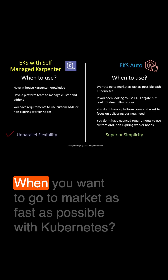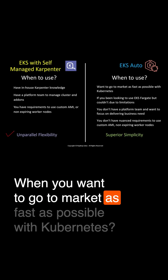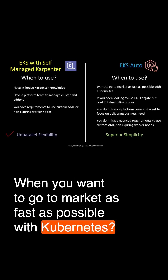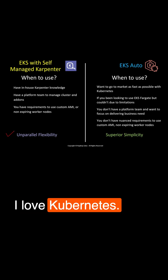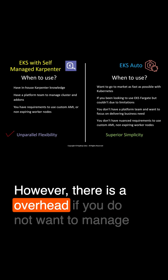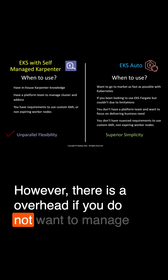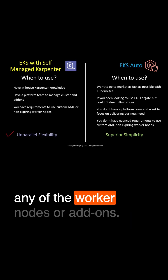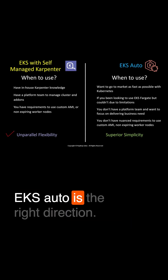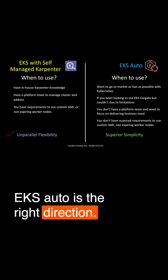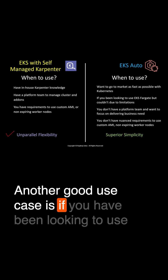How about EKS Auto? When you want to go to market as fast as possible with Kubernetes — Kubernetes is great, I love Kubernetes — however there is overhead. If you do not want to manage any of the worker nodes or add-ons, EKS Auto is the right direction.